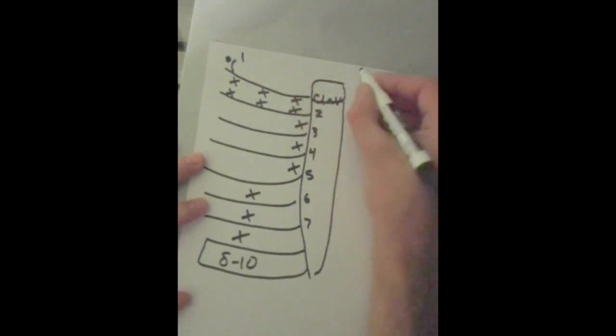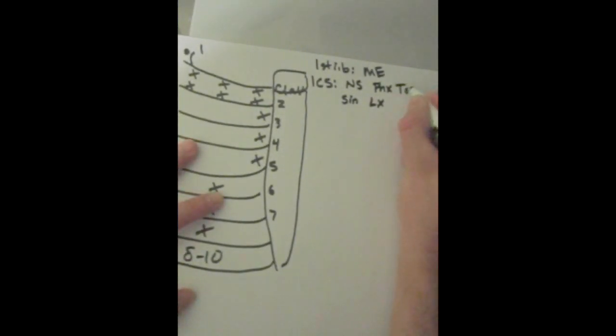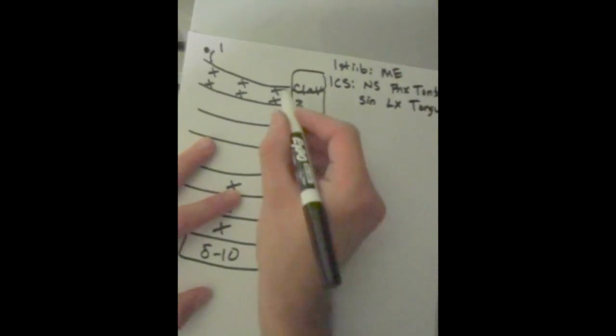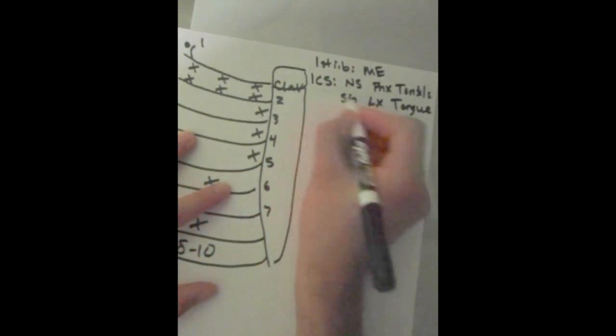So this first rib point is the middle ear. Along the inferior aspect of the clavicle in the first intercostal space, we're going to be having the nasal sinuses over the sinuses. We've got the pharynx over the larynx. Then we have the tonsils over the tongue. And all these points correspond with these points over here on the left.